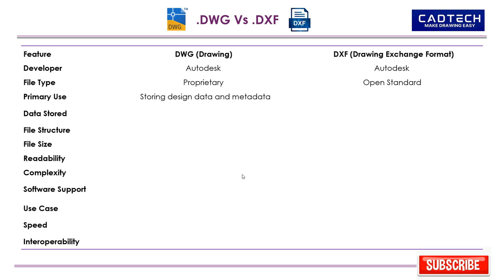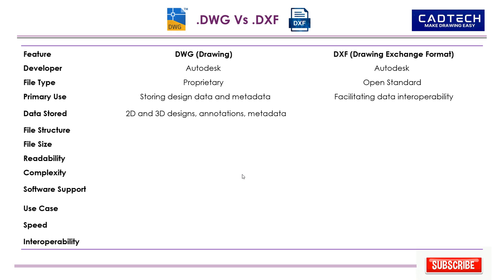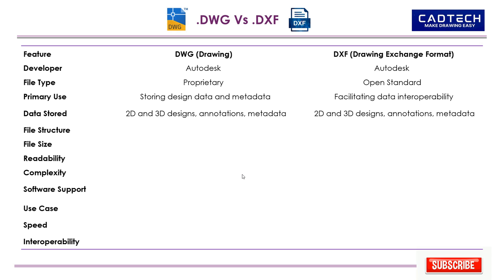Primary use: DWG is mainly used within AutoCAD for design storage, while DXF facilitates data exchange between different CAD programs. Data stored: both formats store 2D and 3D designs, annotations, and metadata, with DWG optimized for AutoCAD-specific data.